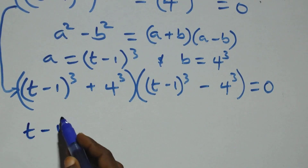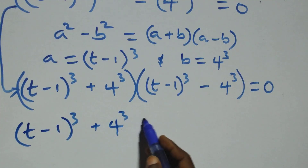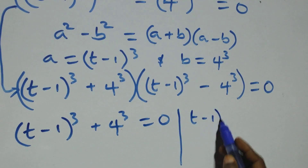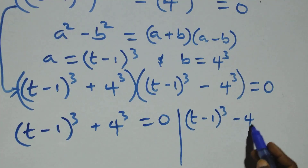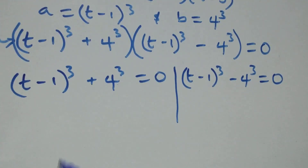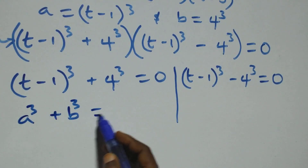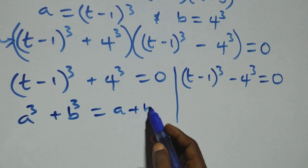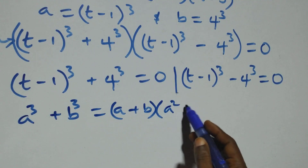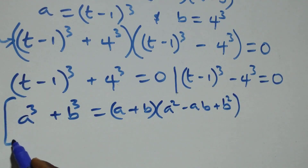Solving on this side, this follows when we have a³ + b³, which is the same as (a + b) times (a² − ab + b²). That is what we have here — follow this.